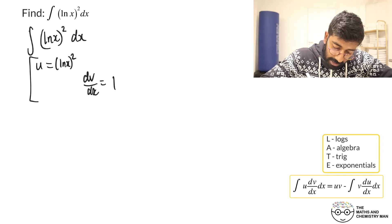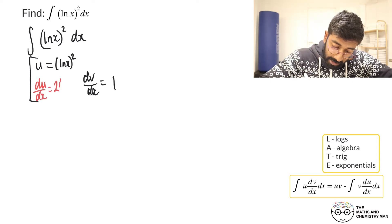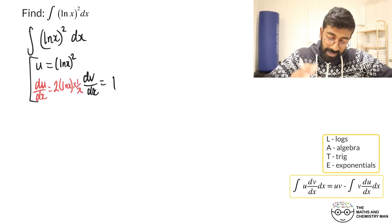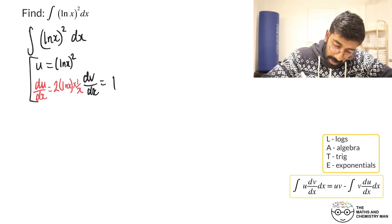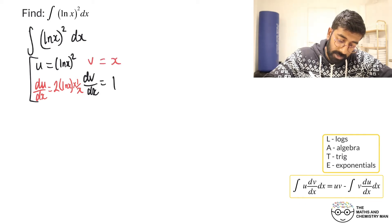If we do some differentiation on this side, du/dx is going to come out as, we'll use the chain rule for this, that's going to be 2ln(x) multiplied by the derivative of ln(x) which is just 1 over x. Then on this side let's integrate, that's going to integrate to just x.